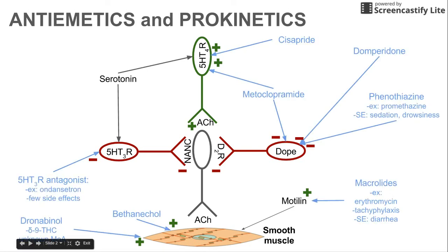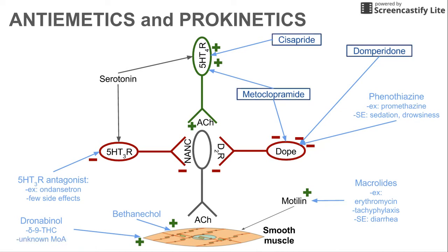The drugs we're going to be talking about are shown in blue. Let's start with these three. Metoclopramide has a dual effect: it activates the 5-HT4 neuron and it deactivates the dopamine neuron, thereby promoting gastric motility through those two mechanisms.